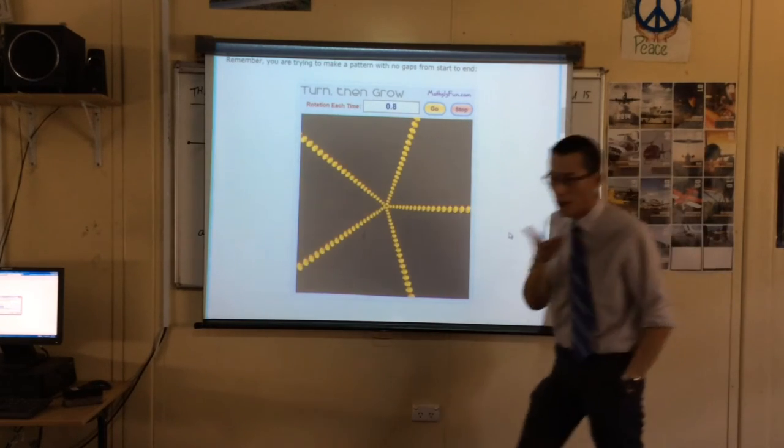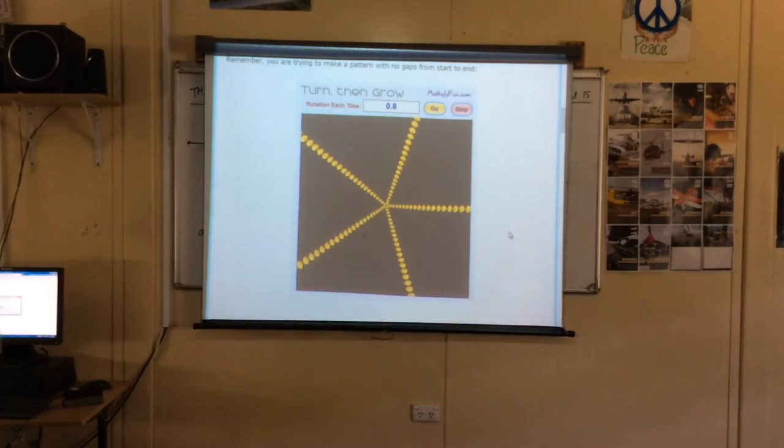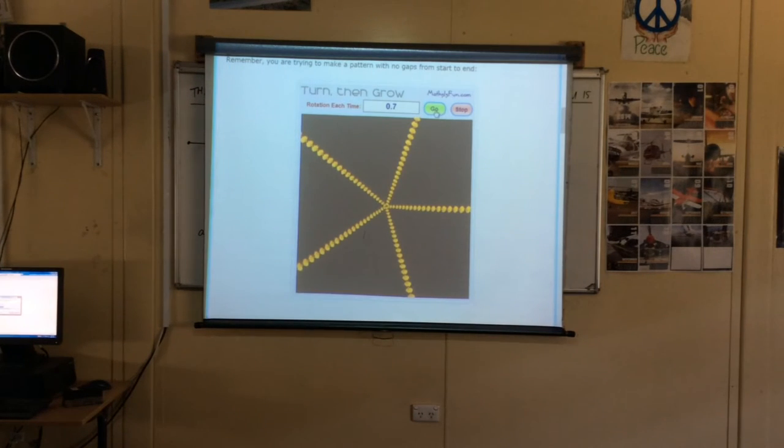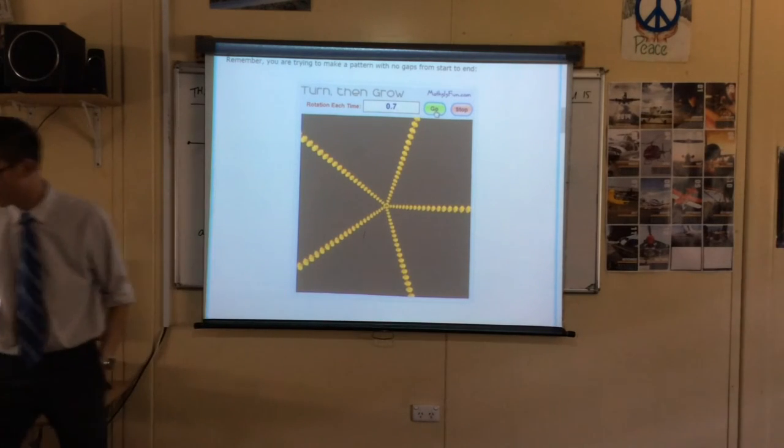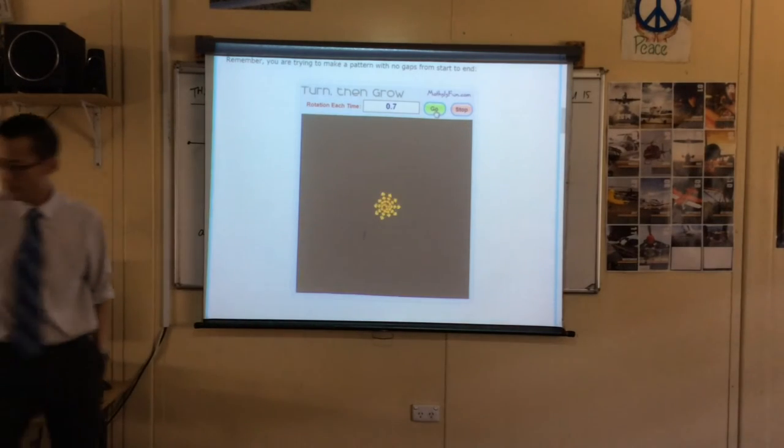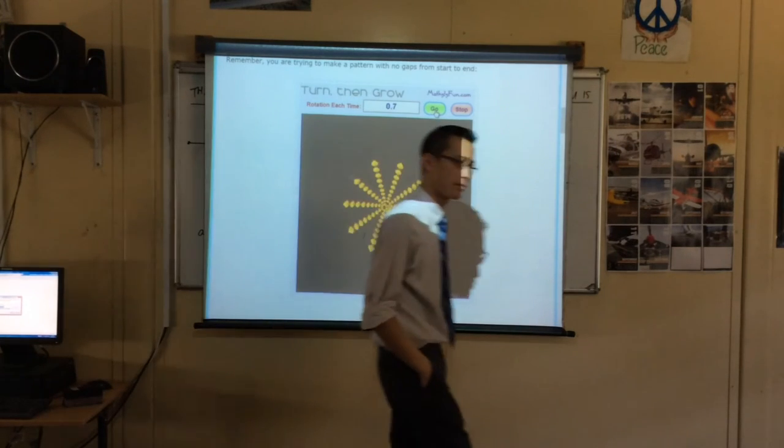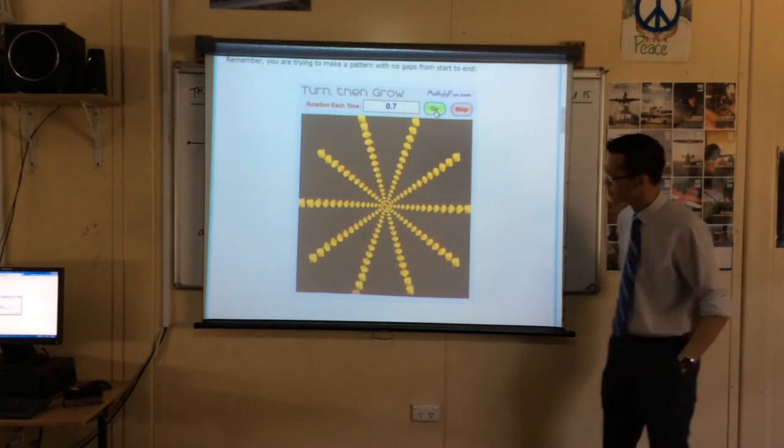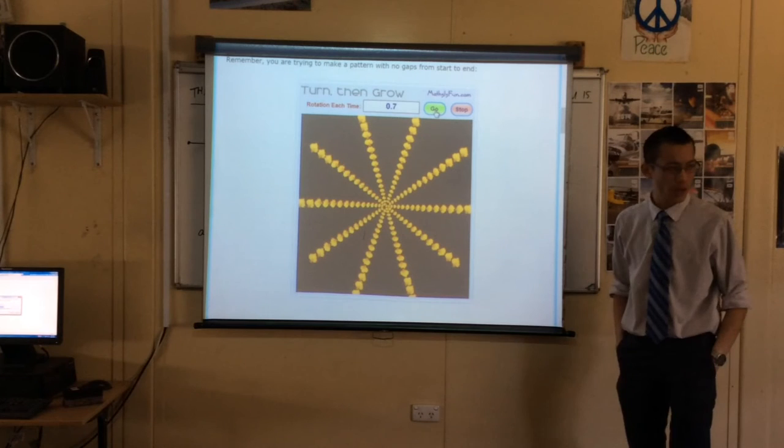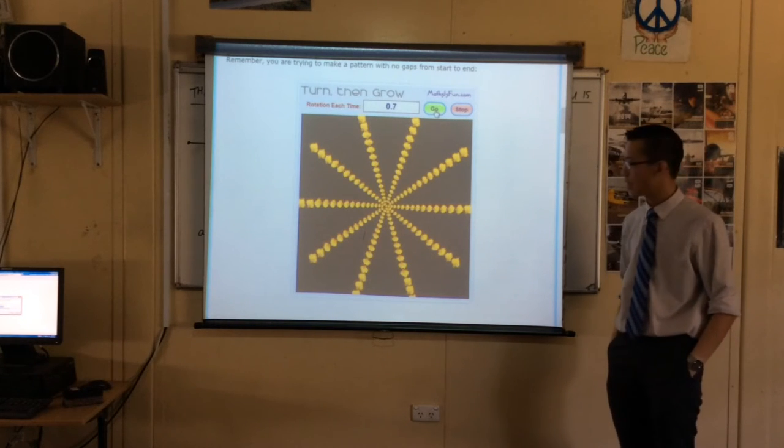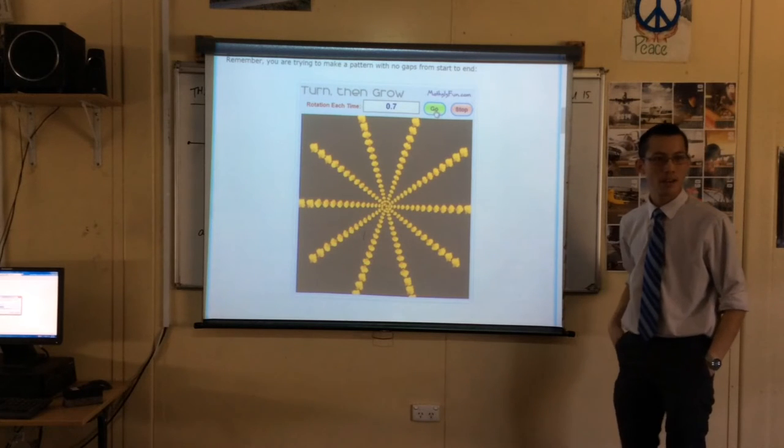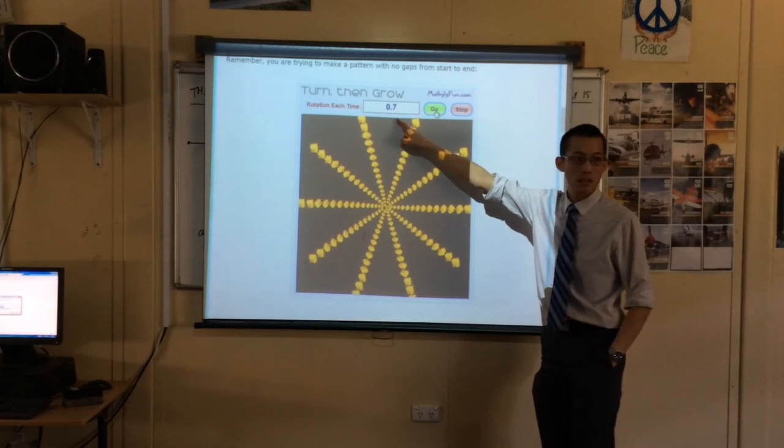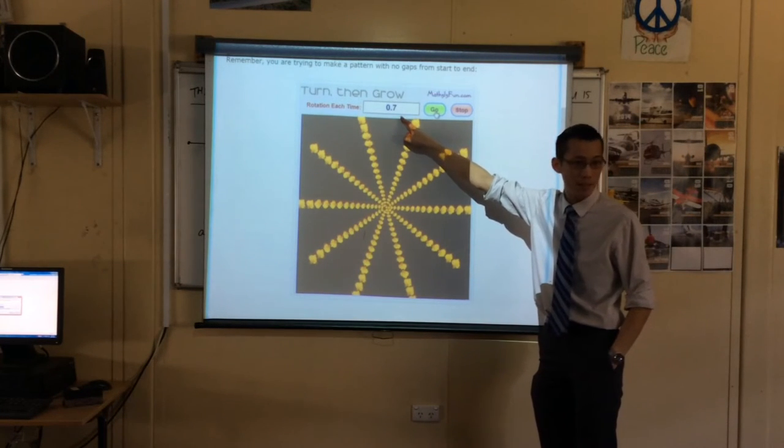But if I do something else, like say 0.7, what do you expect? Ready? Straight or curved? Straight. How many? Ten. There are ten. Why is it ten? It's seven tenths, isn't it?